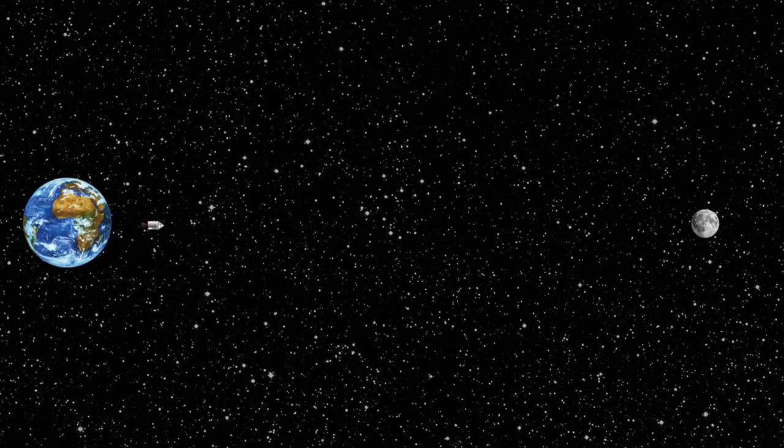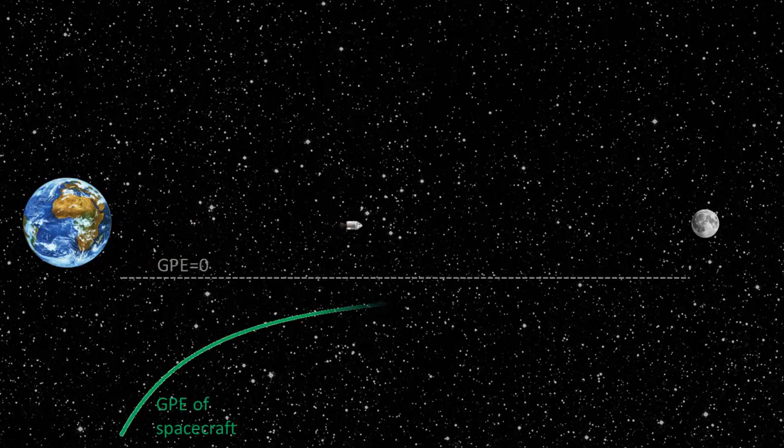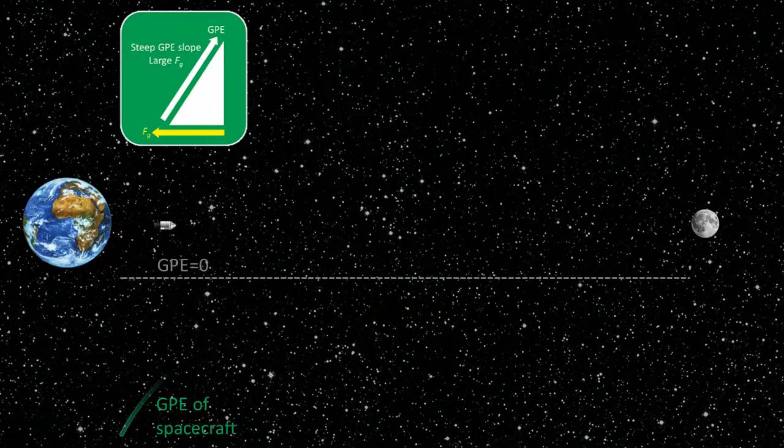This rule applies even for resultant gravitational forces and total GPEs. Take for example a spacecraft travelling from the Earth to the Moon. At the beginning of the journey, the spacecraft gains GPE as it travels away from the Earth.